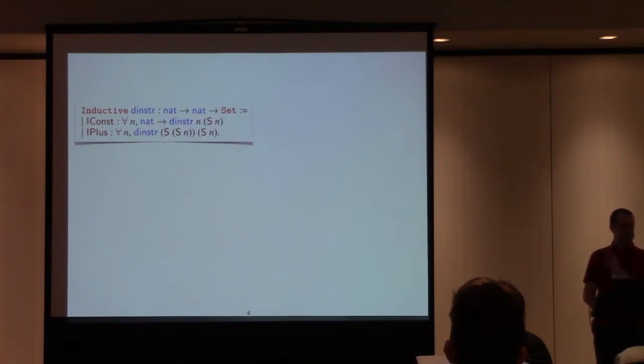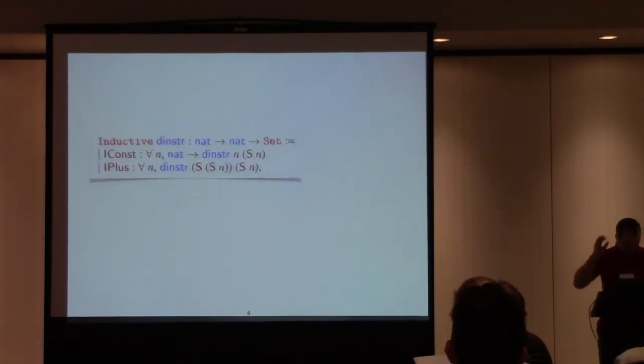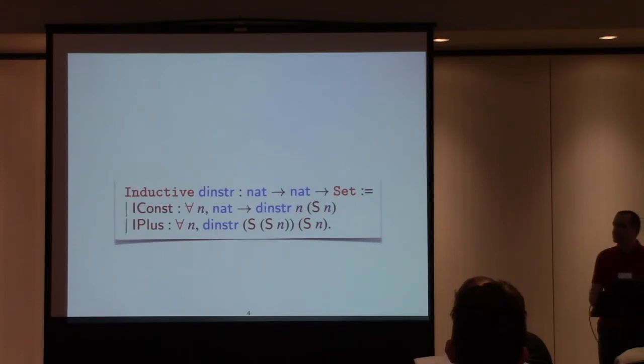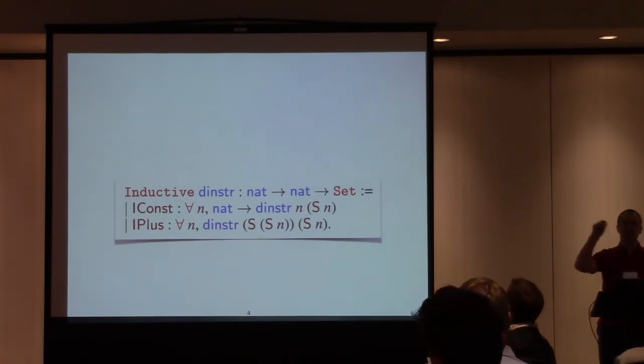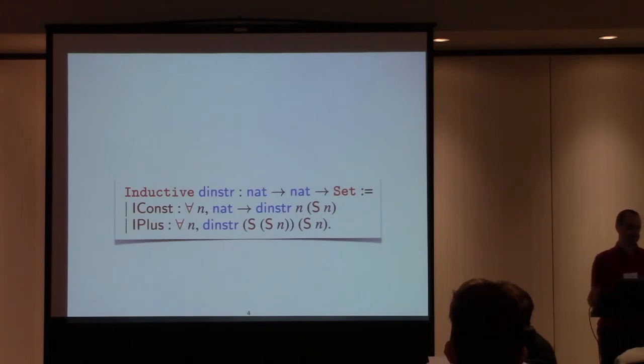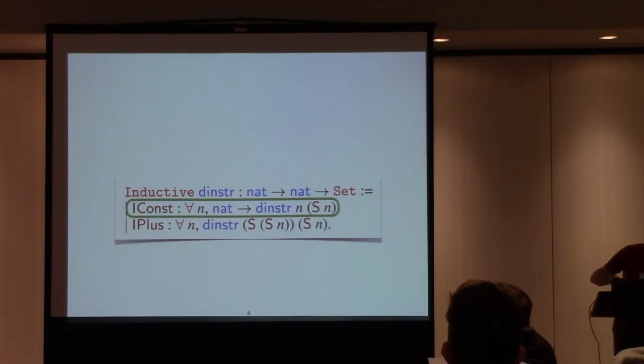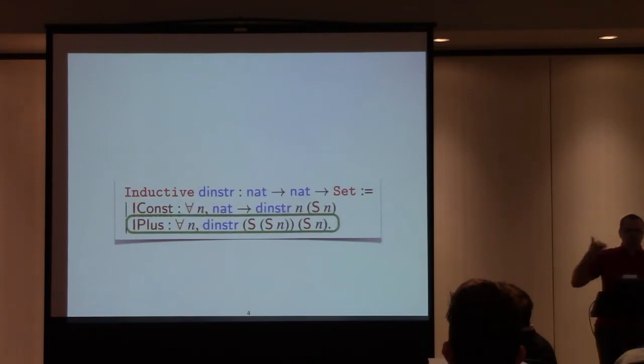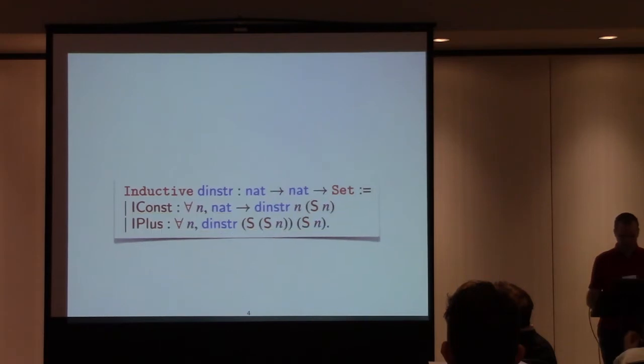Now for the safety part, so this is code that's taken from Adam's book on Certified Programming with Dependent Types in Coq. This is an inductive type family for instructions that operate on a stack machine. So the indices indicate the requirements and effects on the length of the stack. So for a constant, for any stack that you get to before you run the instruction, after that you have one element more on the stack and for plus, there is this express dependency that there must be at least two elements on the stack for plus to be safe. And then you get one element more on the stack. So that's fine.